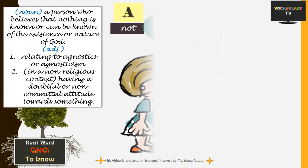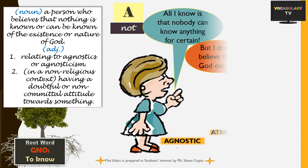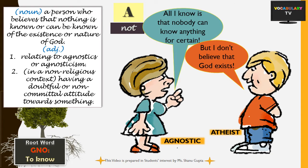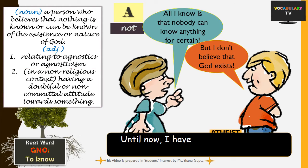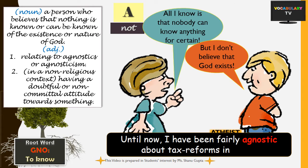Students often confuse 'agnostic' and 'atheist'. To highlight the difference: an agnostic is non-committal about the existence of God, but an atheist does not believe in God at all. The word agnostic can also be used in a non-religious context where someone has a doubtful or non-committal attitude about something. For example: until now, I have been fairly agnostic about the tax reforms in India.